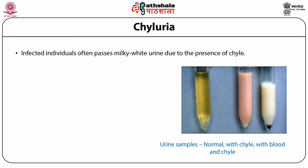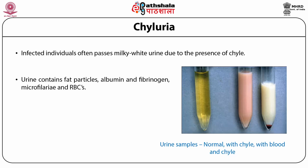Individuals infected with filarial worm often pass milky white urine due to the presence of chyle. Chyle is a milky fluid consisting of lymph and emulsified fats or free fatty acids. It is formed in the small intestine during digestion of fatty foods and taken up by lymph vessels called lacteals, through which it reaches the blood. The urine also contains fat particles, albumin, and fibrinogen along with microfilariae and RBCs. Presence of only chyle in urine is called chyluria, while presence of blood in urine with chyle is known as hematuria.